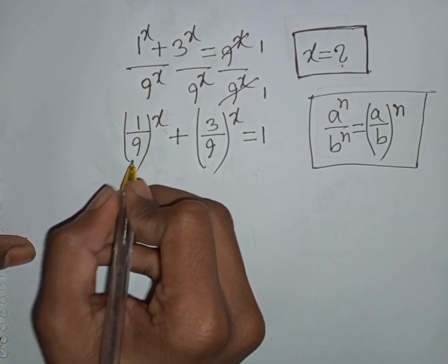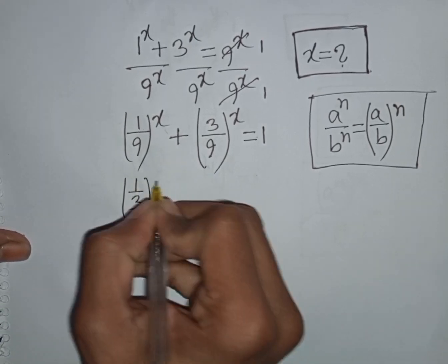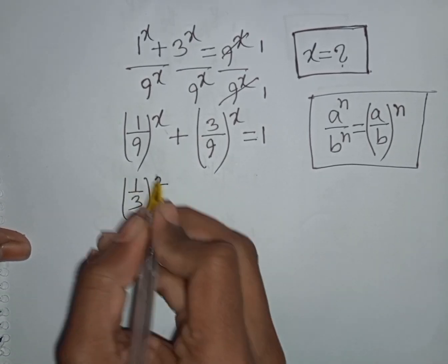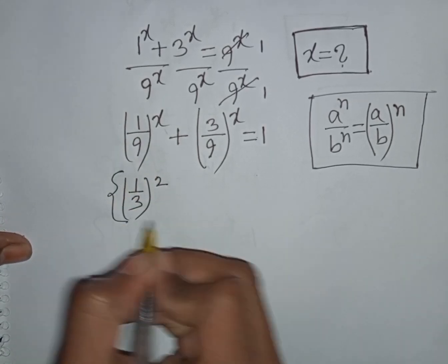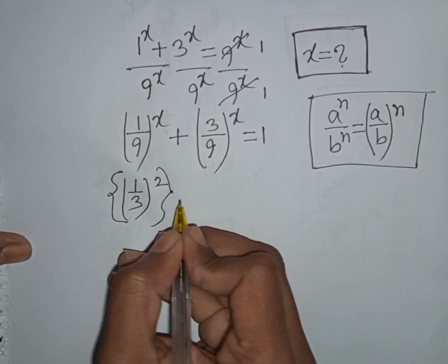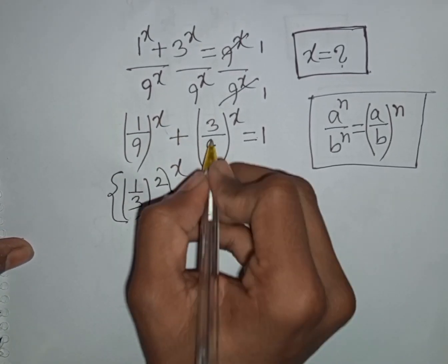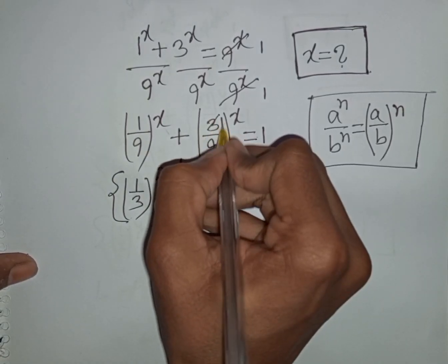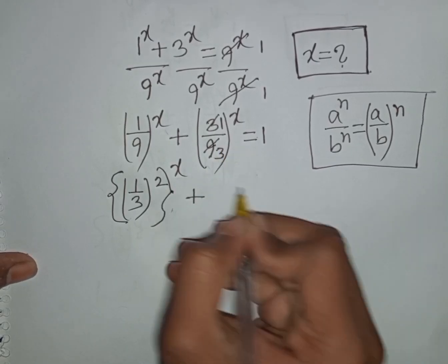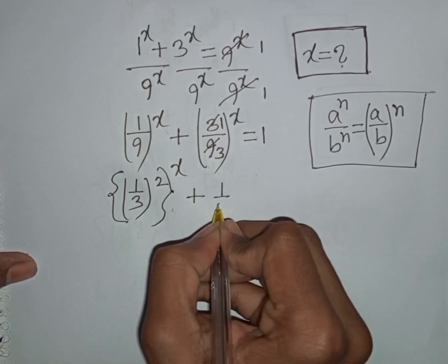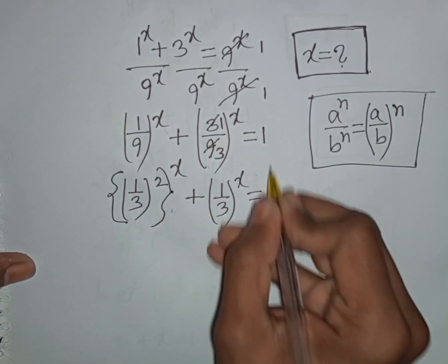Now 1/9 can be written as (1/3)^2, since 1 squared is 1 and 3 squared is 9. Then 3/9 divided by 3 means the numerator is 1 and denominator is 3, so 3/9 = 1/3.